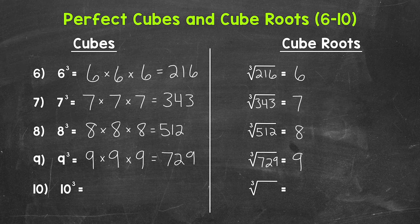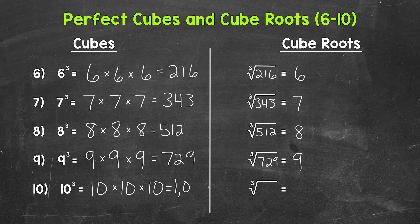Let's move on to number ten where we have ten cubed. That means ten times ten times ten. Ten times ten is one hundred, and one hundred times ten equals one thousand. Ten cubed equals one thousand, which means the cube root of one thousand equals ten.